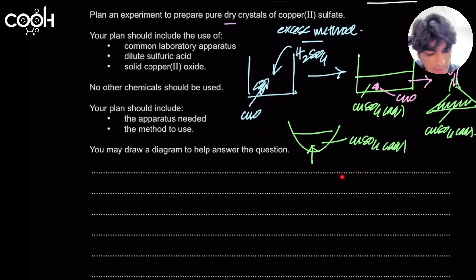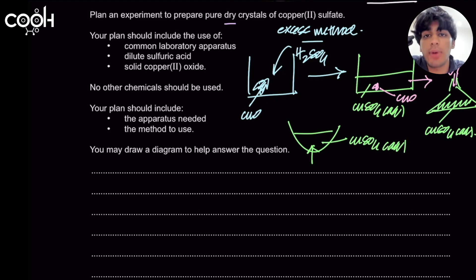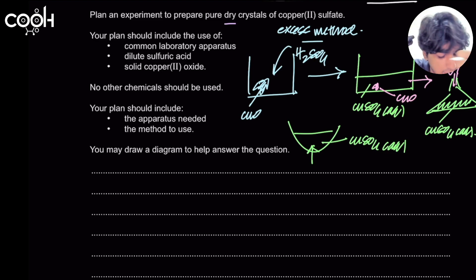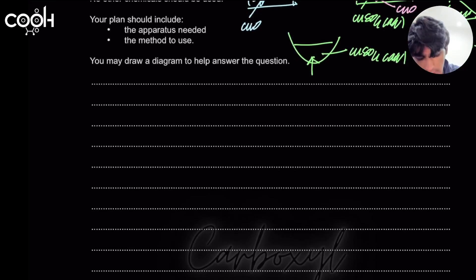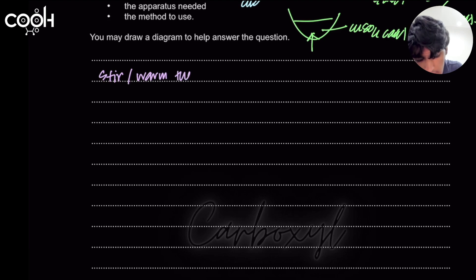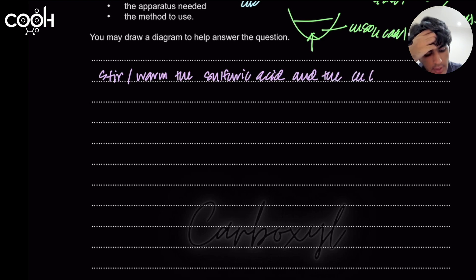To identify when the point of crystallization has been reached, take a few drops and place them on a cool microscope slide — if it starts to solidify, the point of crystallization has been reached. Now for the written procedure: stir or warm the sulfuric acid and copper oxide together in a beaker.